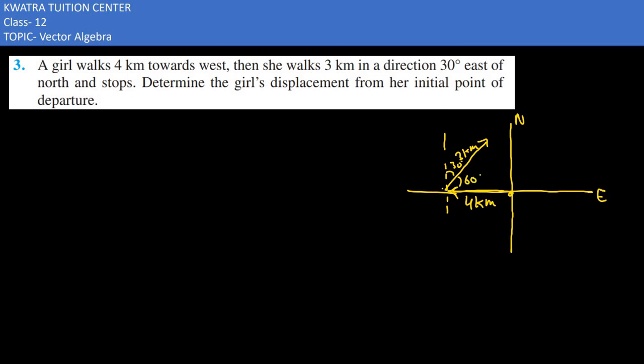Now they are saying to determine the girl's displacement from her initial point of departure. We have to find this distance. So let's say this is A, this is B here, and we have to draw a perpendicular. Why draw this perpendicular? Because we have a right angle triangle.